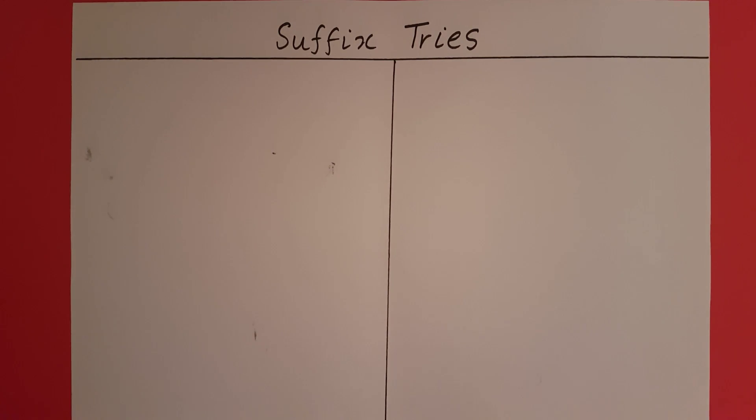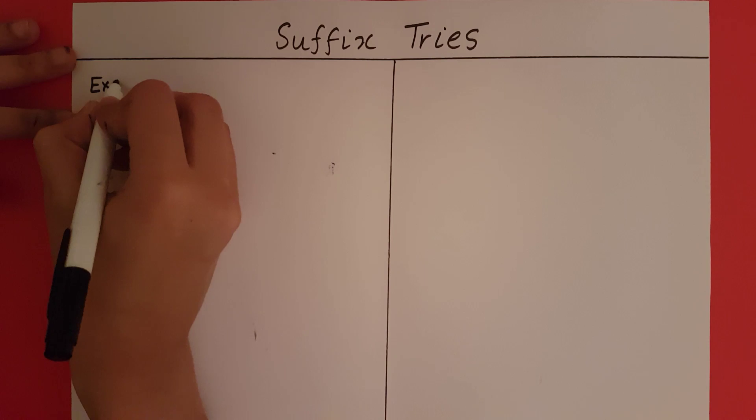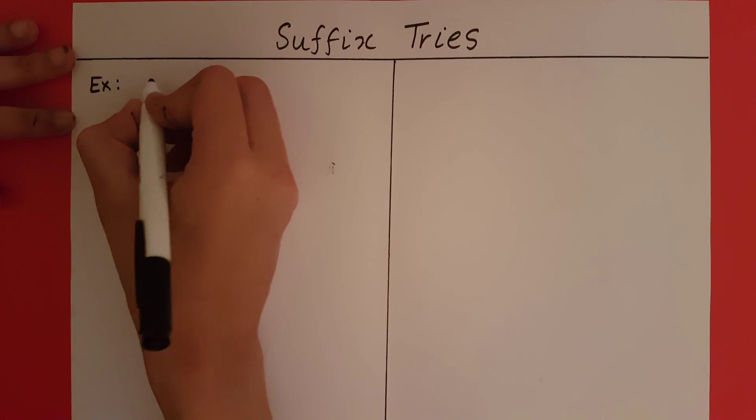In this video we are going to take a look at how to construct a suffix trie given a word. Let's start using an example. The word we want to build the suffix trie for is minimize.